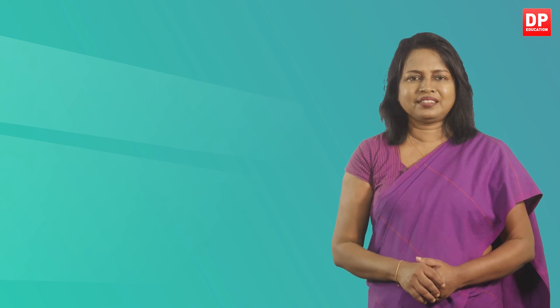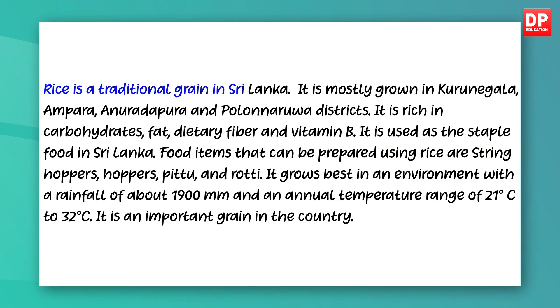Okay, let's see how you have done it. I will read a sample paragraph that I have written. Rice is a traditional grain in Sri Lanka. It is mostly grown in Kurunegala, Ampara, Anuradhapura, and Polonnaruwa districts. It is rich in carbohydrates, fat, dietary fibre, and vitamin B. It is used as the staple food in Sri Lanka. Food items that can be prepared using rice are string hoppers, hoppers, pittu, and roti. It grows best in an environment with a rainfall of about 1900 millimetres and an annual temperature range of 21 degrees Celsius to 32 degrees Celsius. It is an important grain in the country. Hope you could write something similar.